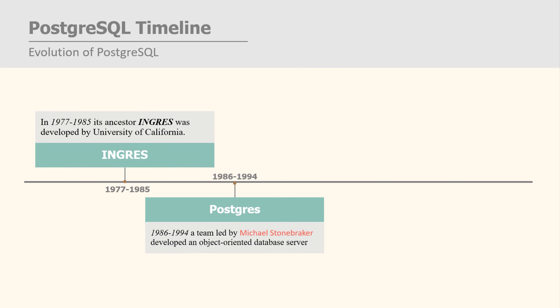After that, during 1986 to 1994, a team led by Michael Stonebreaker developed an object-oriented database server which was called Postgres.